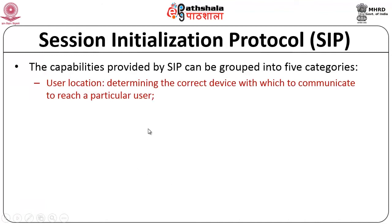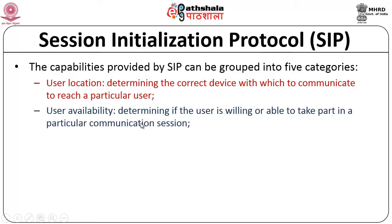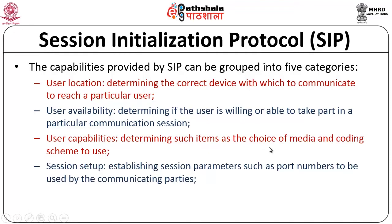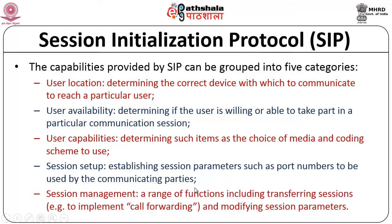The capabilities of SIP fall into five categories: user location (determining the current device to communicate with), user availability (determining if the user is willing or able to participate), user capabilities (determining the choice of media and coding scheme), session setup (establishing session parameters such as port numbers), and session management (transferring sessions, call forwarding, modifying session parameters during the session).